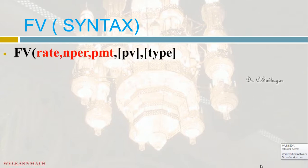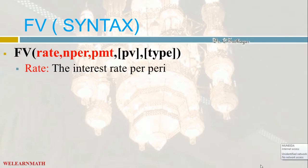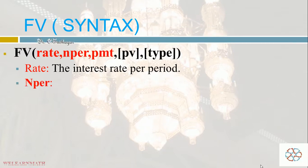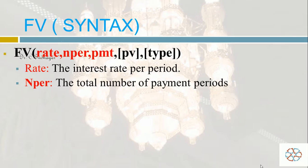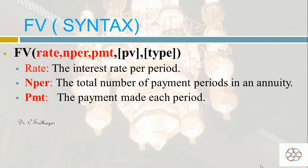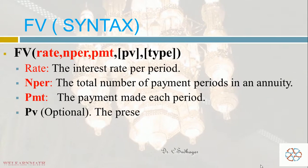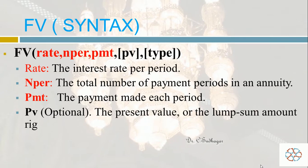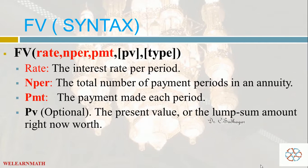The syntax for FV has five components. First is the Rate — the rate of interest which is offered, constant throughout the period. NPER is the total number of payments paid in an annuity. PMT is the payment made each period. PV, the Present Value, is optional if payments are made periodically, but if the payment is made as a lump sum, we specify the present value of the investment.